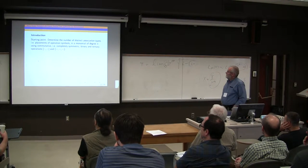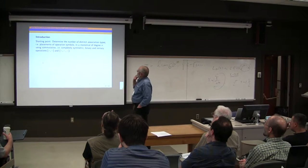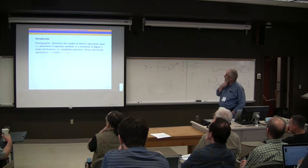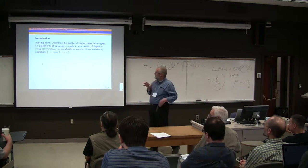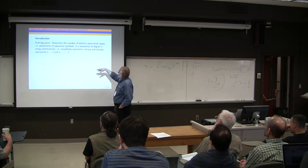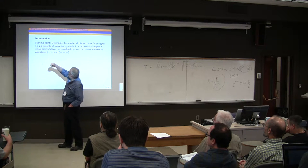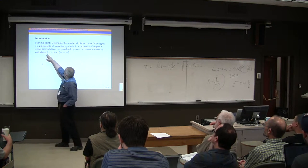So I'm interested in determining the number of distinct association types. That's a term that goes back to Wedderburn's original paper. Association types means placements of operation symbols or placements of parentheses in a monomial degree n. In this particular talk, I'm interested in using commutative, which means completely symmetric binary and ternary operations.